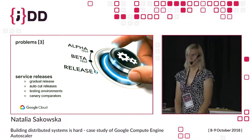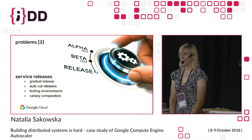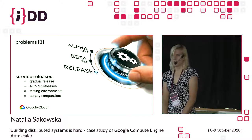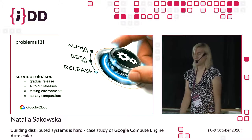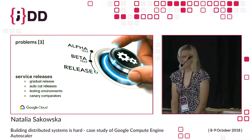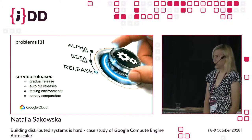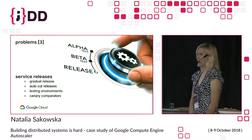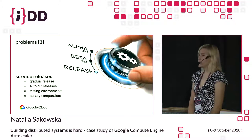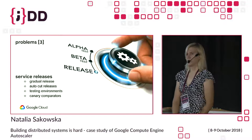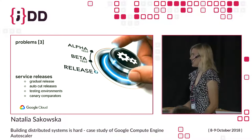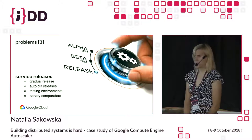There can be bugs that can only be detected in production environments and are very difficult to spot earlier. It's possible that you have skipped some test cases — we're only humans. So this is why we don't want to release everywhere at once. We want to do a gradual release, data center by data center.